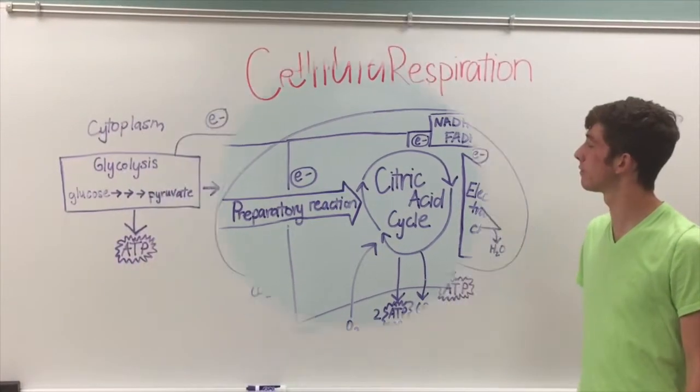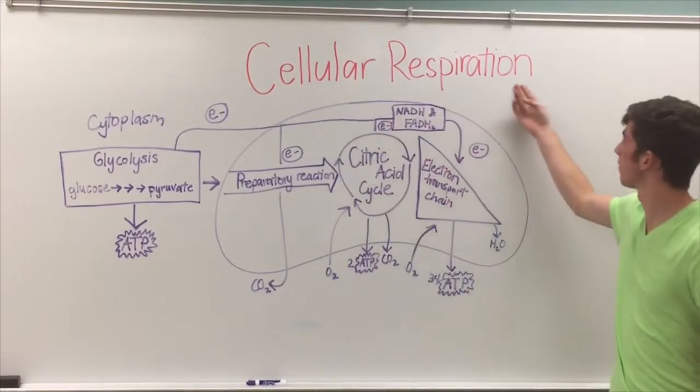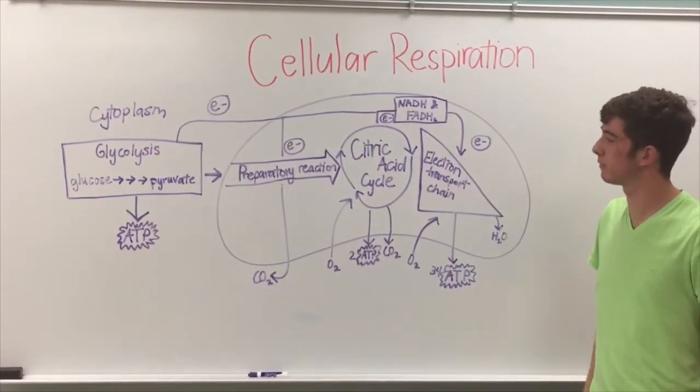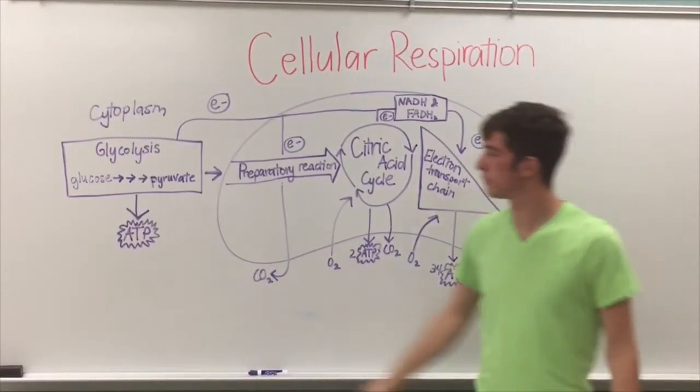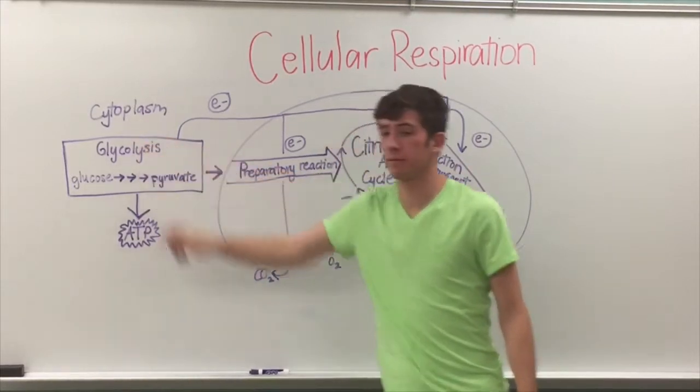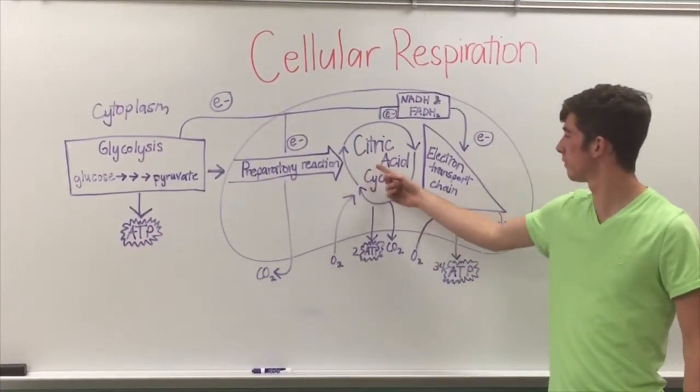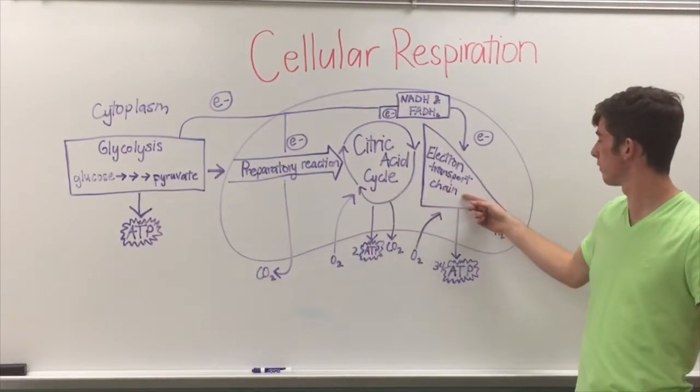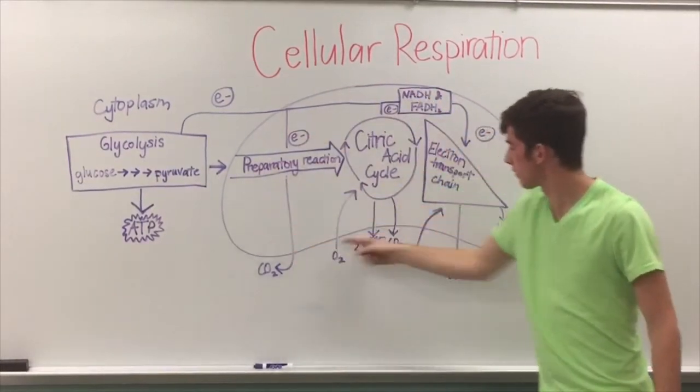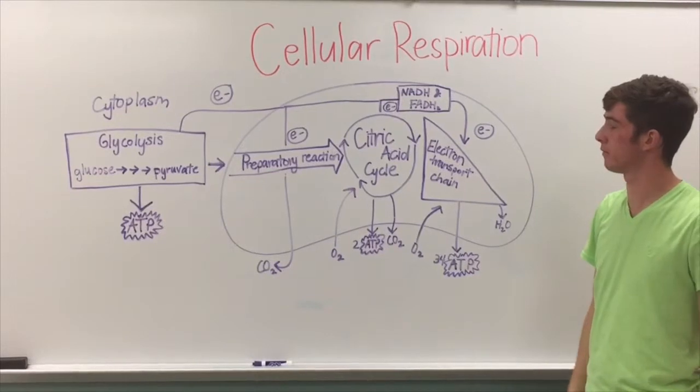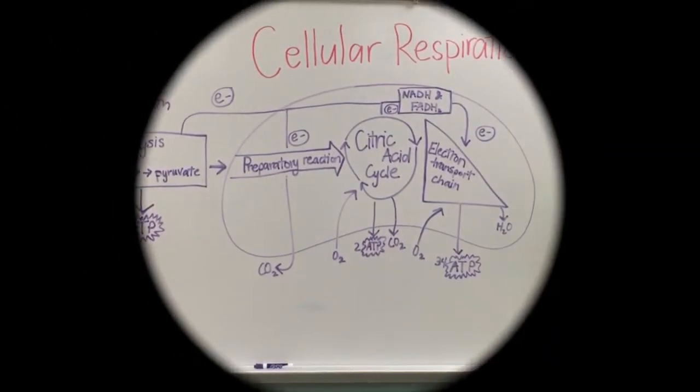Now we are going to talk about cellular respiration. The enzymatic reactions of glycolysis take place in the cytoplasm. The preparatory reaction, the citric acid cycle, and the electron transport chain occur in the mitochondria. Next, we are going to be talking about glycolysis.